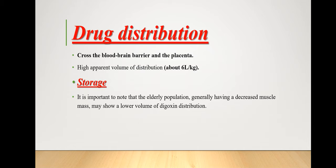Drug distribution is the movement of drug from the blood into the interstitium and then into cells of tissues. Digoxin has a wide volume of distribution and is widely available in the body. It is known to cross the blood-brain barrier and placenta. Digoxin is widely distributed toward body tissues and has a high apparent volume of distribution of about 6 liters per kilogram.